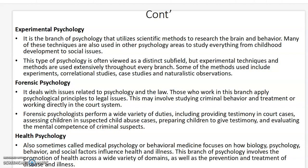Experimental psychology utilizes scientific methods to research the brain and behavior. Many of these techniques are also used in other psychology areas to study everything from childhood development to social issues. This type of psychology is often viewed as a distinct subfield, but experimental techniques and methods are used extensively throughout every branch. Some of the methods used include experiments, correlational studies, case studies, and naturalistic observations.